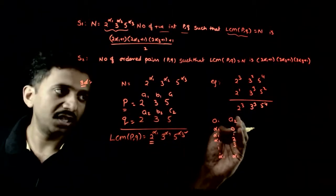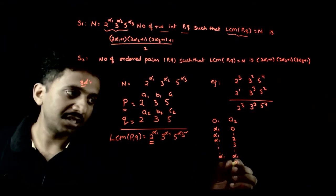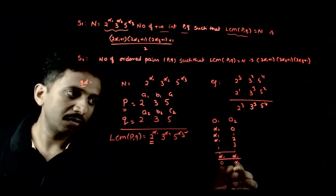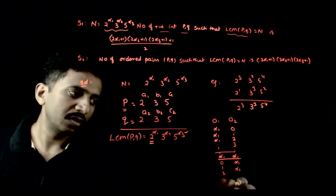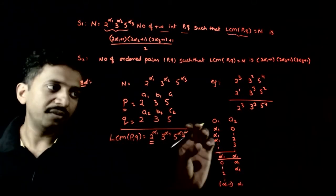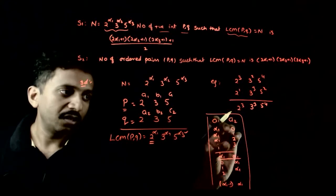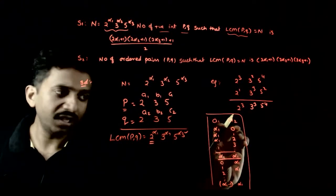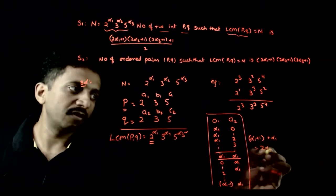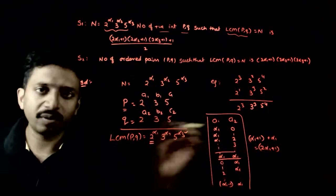If a1 = α1, then a2 can be anything from 0 to α1. If instead a2 = α1, then a1 can range from 0 to α1−1 (since α1 is already covered by a2), giving α1 choices. So the total number of ways to select (a1, a2) is (α1+1) + α1 = 2α1+1 ways.